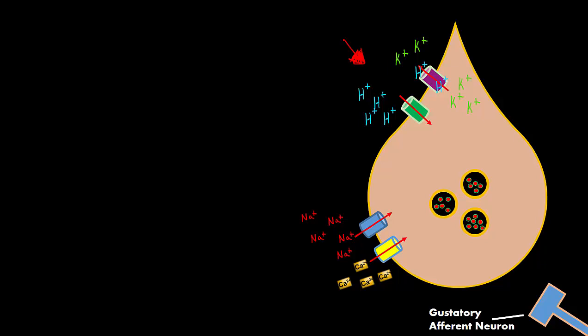And potassium has a positive charge on it. So it's going to cause depolarization of that cell. And so will the hydrogen ion that's coming in. So once that happens, we're going to have a graded potential happen.